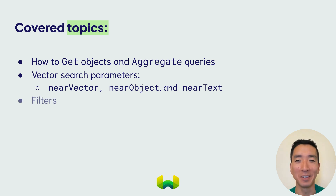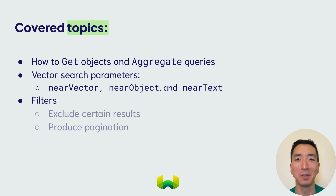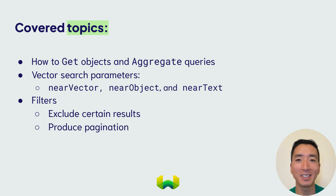And you'll learn about filters, which you can use to place limitations on your search. For example, you'll learn how to use filters to search for data objects that include particular text, or meet numerical ranges. You'll also learn how filters can help you to produce pagination, so that you can efficiently relay groups of results to the user.